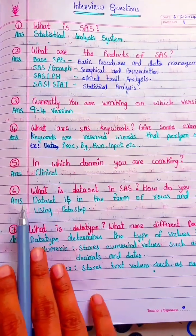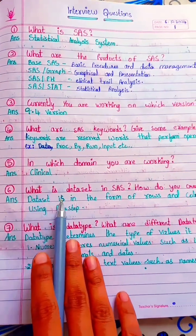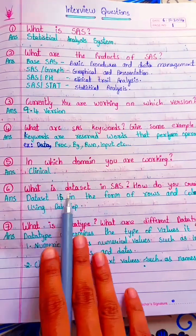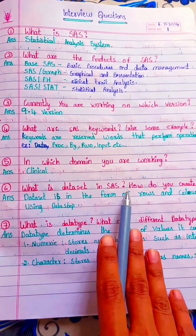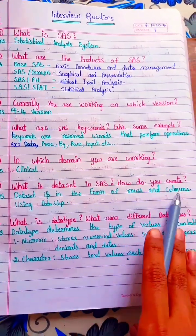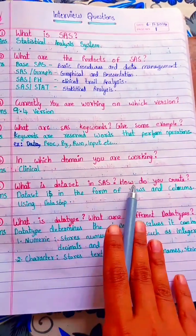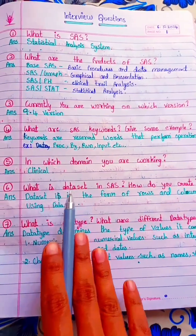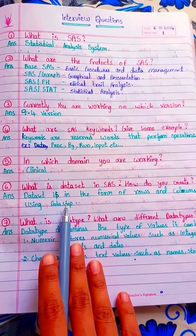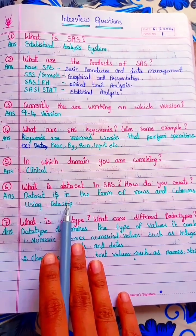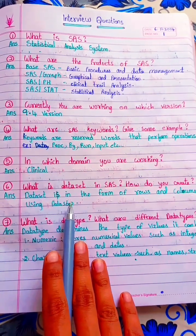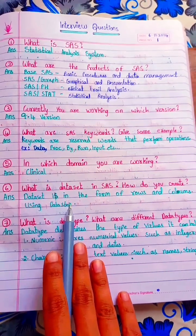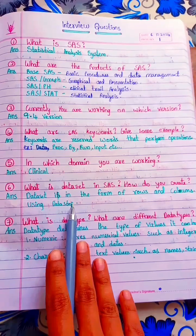What is a dataset? A dataset is nothing but data in the form of rows and columns. You create a dataset by using the DATA step. I have explained the program structure of SAS — go through and watch that video, it will be easy for you.